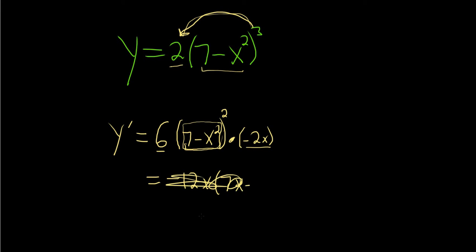Whoops, let's write that again. Negative 12x, parentheses, 7 minus x squared. And then this whole thing here is squared. And that would be the final answer. I hope this video has been helpful. We'll see you next time.